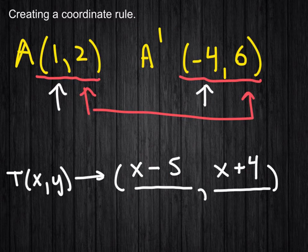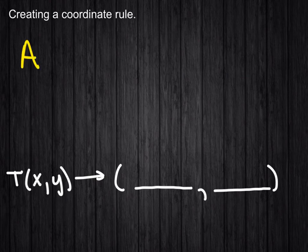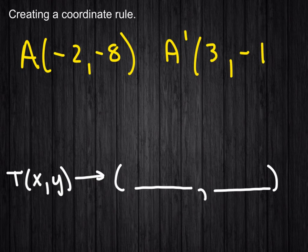Let's just do one more here quickly. Let's quickly create two new points. Let's do negative 2, negative 8, and it landed at 3 and negative 1.